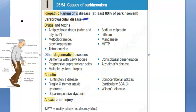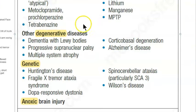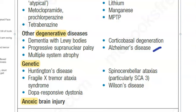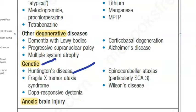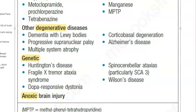Other causes of parkinsonism include: cerebrovascular disease — some vascular problem in the brain; drugs and toxins such as antipsychotics and lithium; degenerative diseases like Alzheimer's, multiple system atrophy, and dementia with Lewy bodies; genetic causes like Huntington's disease; Wilson's disease due to copper accumulation; and anoxic brain injury.